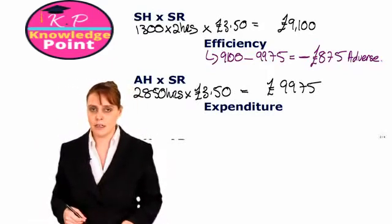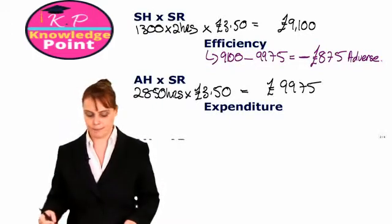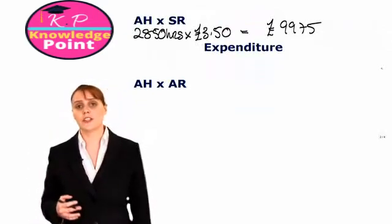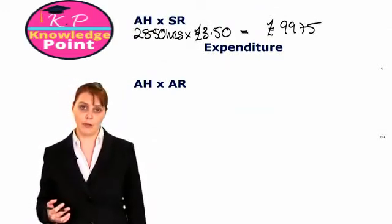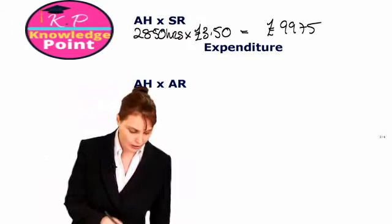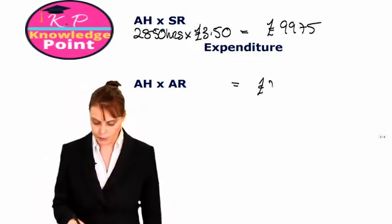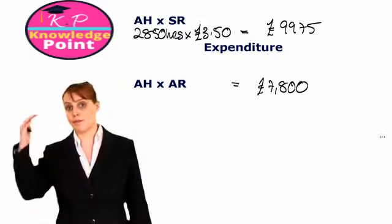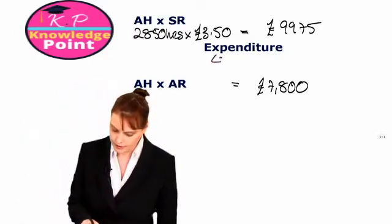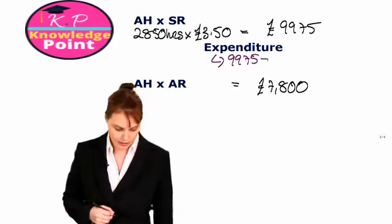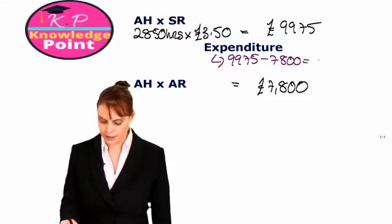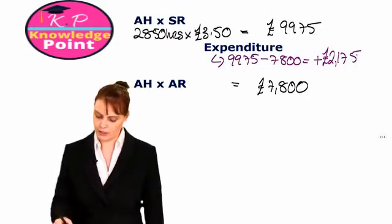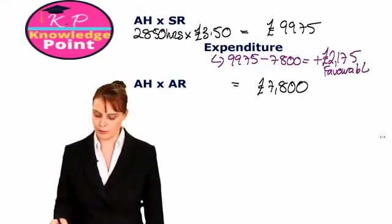Moving on to our second variance — our variable overhead expenditure variance. We've calculated our actual hours at the standard rate, so all we need to do is compare this to our actual variable overhead incurred, which we were told was £7,800 in total. Top figure minus bottom figure: £9,975 minus £7,800 gives us a positive figure of £2,175. It is a positive figure, so we have had a favorable variance — our variable overheads have cost us less than expected.